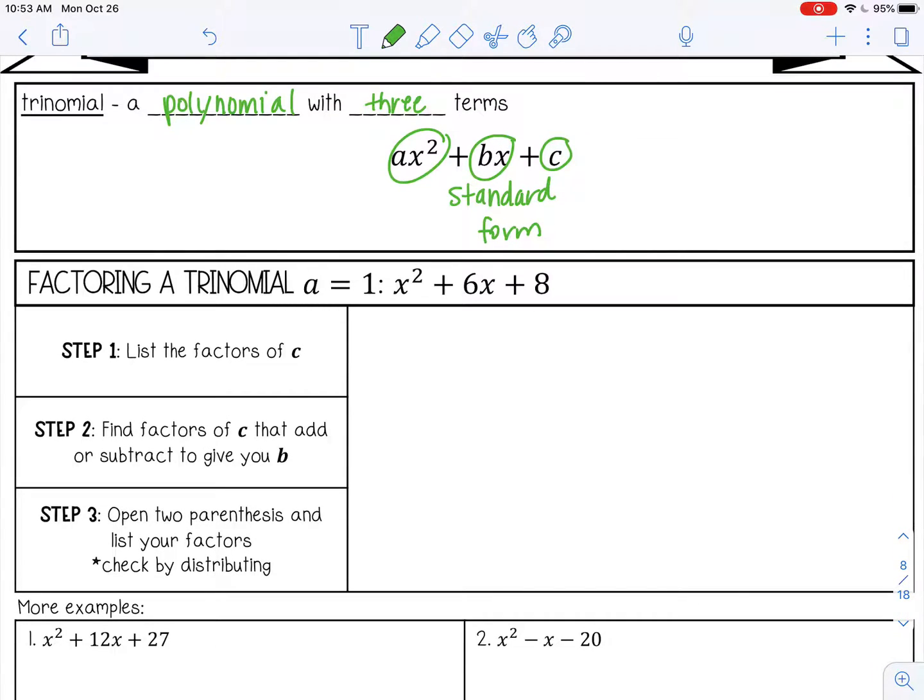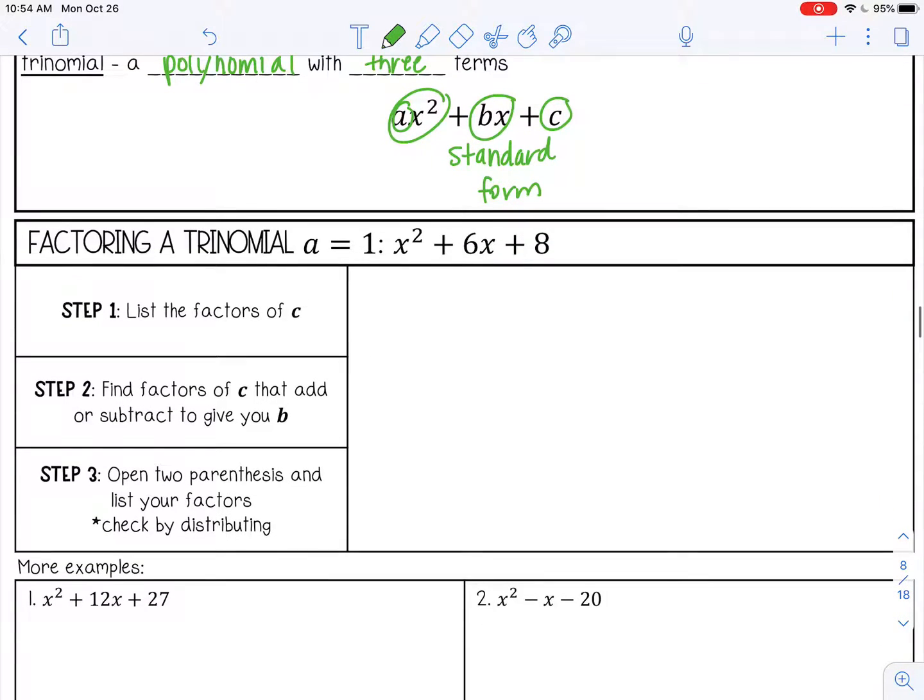So let's go over the steps. So a equals 1 means that there will be no coefficient of a, meaning you're just going to have x squared as your first term, or it could be another variable, y squared, same thing. So you have an example here, x squared plus 6x plus 8. So there's no coefficient in front of x. It's 1, so you don't have to list it.